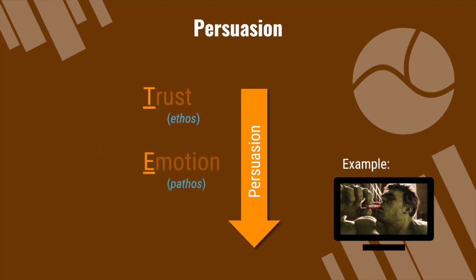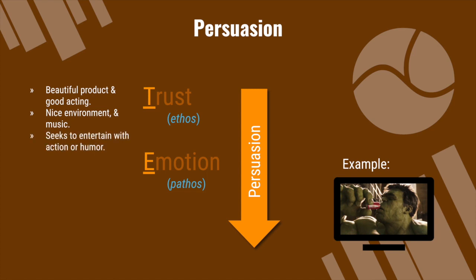Next, emotion — pathos. Advertisements use pictures of a beautiful product and good acting, maybe a nice environment and music. They seek to entertain with action or humor. This is where our rhetorical strategies and rhetorical devices often come in — this appeal to emotion. The purpose here is to create a positive emotional association.